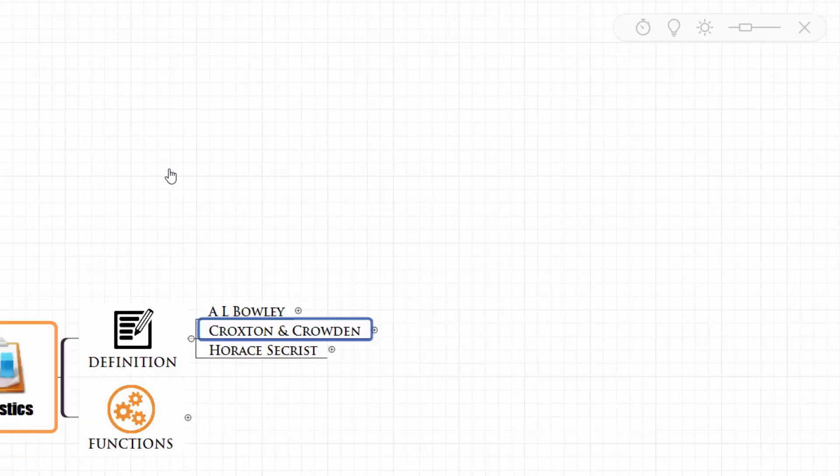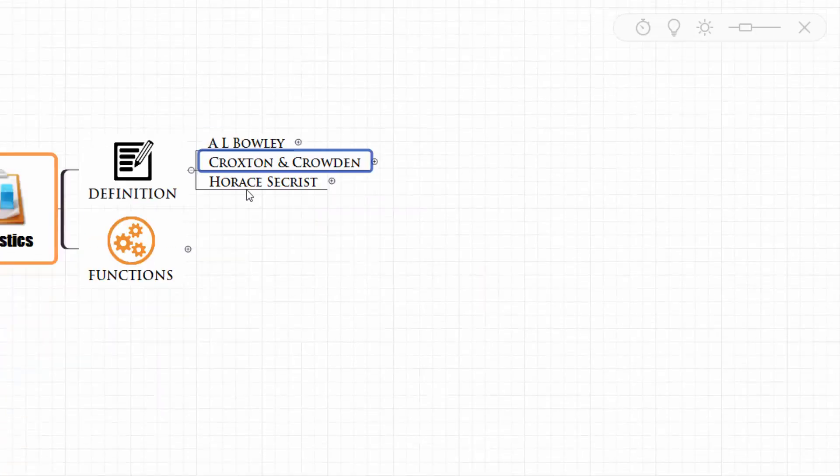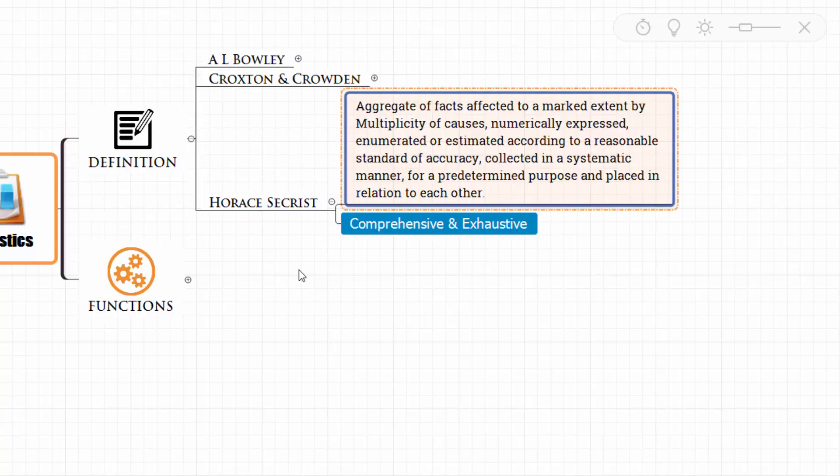Next, we also have a definition of statistics from Horace Secrist. The definition reads like this: statistics is aggregate of facts affected to a marked extent by multiple state of causes, numerically expressed, enumerated or estimated according to reasonable standard of accuracy, collected in a systematic manner for predetermined purpose, and placed in relation to each other. So here the focus is on the facts which are collected.